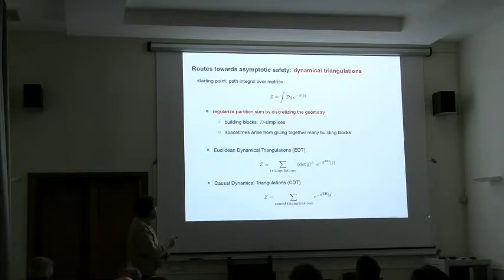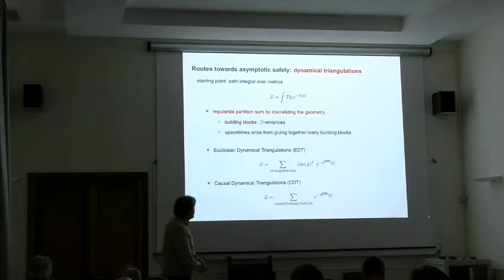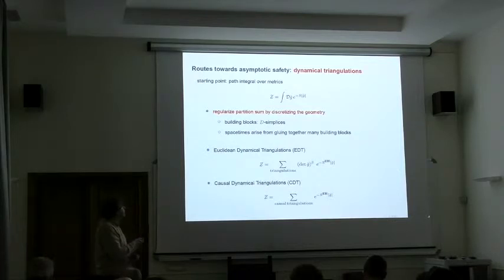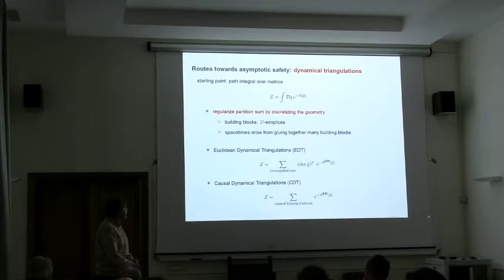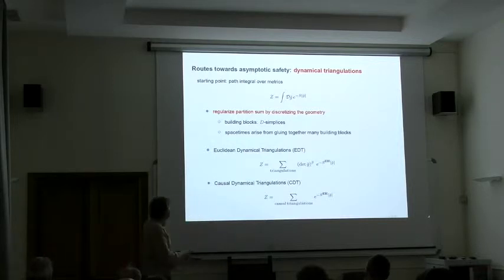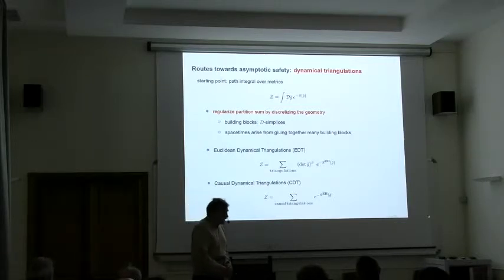You make this integral here into a sum over possible configurations. There are two versions of this. Euclidean triangulations admit all triangulations in the sum of the partition sum. Causal dynamical triangulations restricts the sum to a subset. Essentially, what you do here is you impose a foliation structure on spacetime. Clearly, the same starting point up here should tell you that what you do that gets out down here should be related in some way.